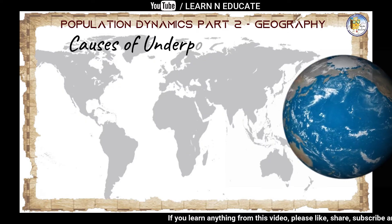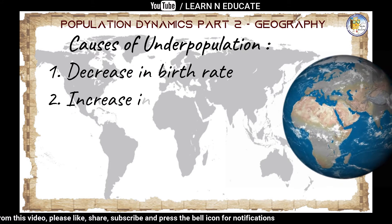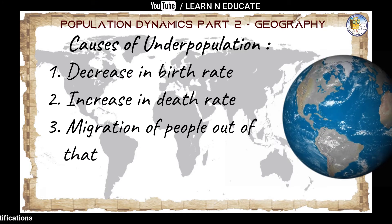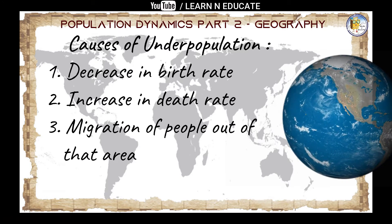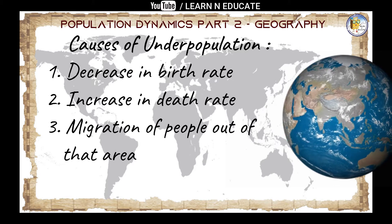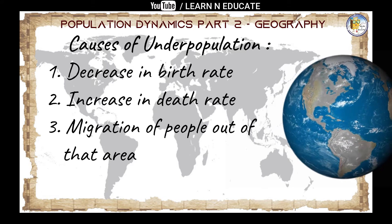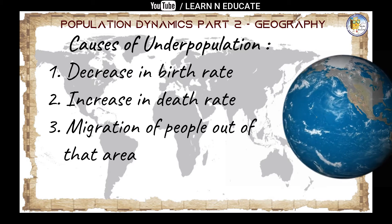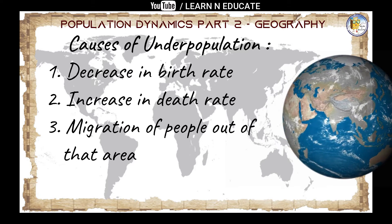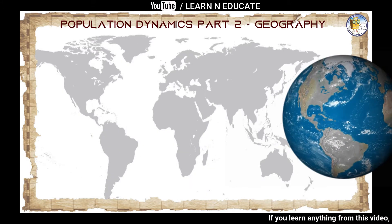The causes of underpopulation are: a decrease in birth rate — if the number of live births is less, the population will be low; an increase in death rate — if more people are dying, the population will decrease; and migration of people out of that area — if people from a certain area are moving and residing somewhere else, that area will have less population.